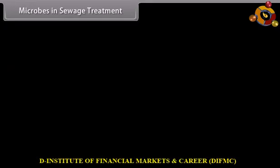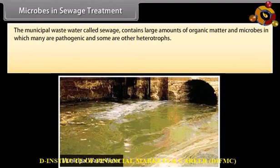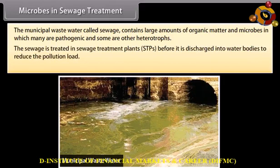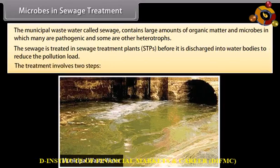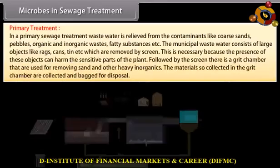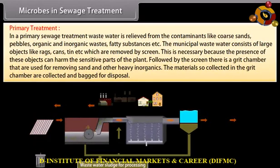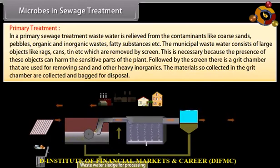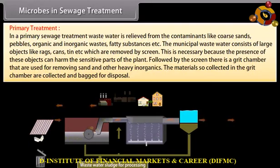Microbes in sewage treatment. The municipal wastewater, called sewage, contains large amounts of organic matter and microbes, many of which are pathogenic and some are other heterotrophs. The sewage is treated in sewage treatment plants (STPs) before it is discharged into water bodies to reduce the pollution load. The treatment involves two steps. Primary treatment: wastewater is relieved from contaminants like coarse sands, pebbles, organic and inorganic wastes, and fatty substances. The municipal waste water consists of large objects like rags, cans, and tin, which are removed by screens.